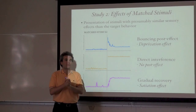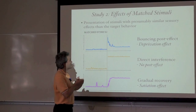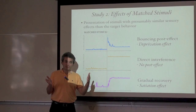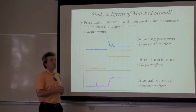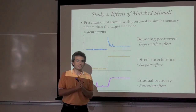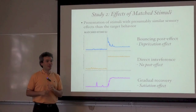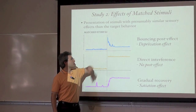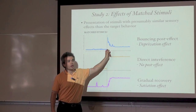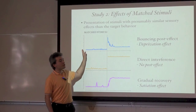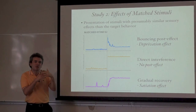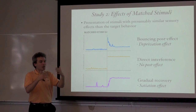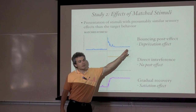When you don't have access for some time to something reinforcing, what happens when you suddenly have access again? You want to do it more — at least temporarily. That's what we assume is happening with the bouncing effect. This is compatible with what we call a deprivation effect, in which the client has not had access to sensory feedback for some time, so when it becomes available again, they engage in the behavior temporarily more often until they settle back to baseline levels.